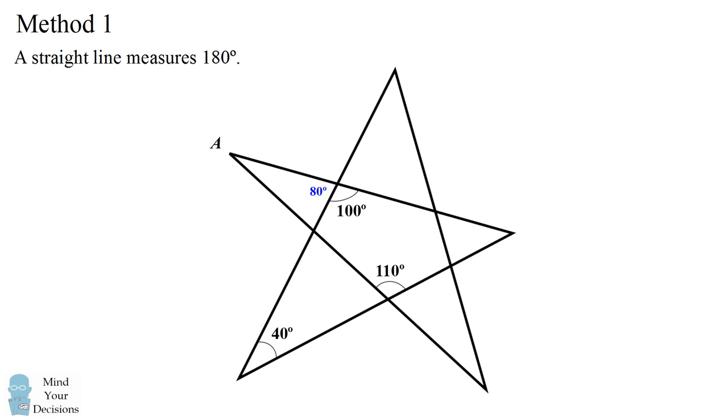Similarly, the angle next to 110 degrees must equal 180 minus 110 and therefore that angle is equal to 70 degrees.